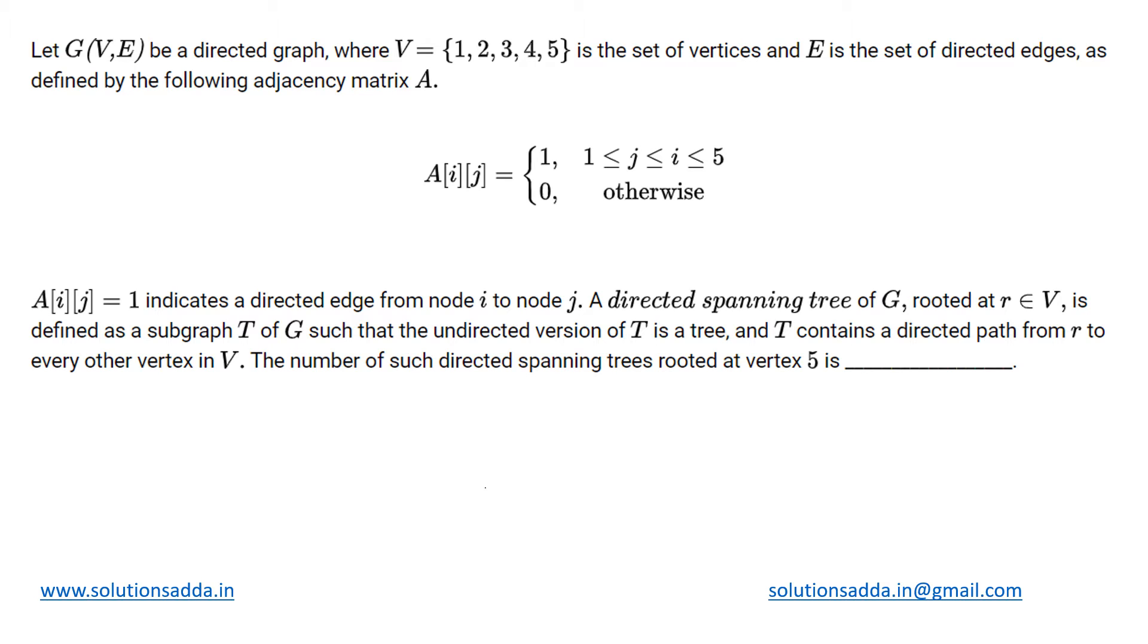This is a graph theory question. We have been given a graph G which is directed, with vertex set {1, 2, 3, 4, 5} and a set of edges E represented by the adjacency matrix.